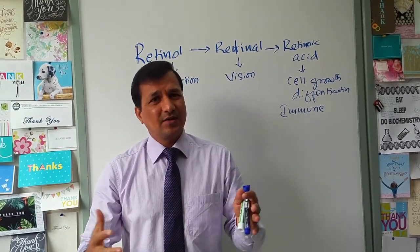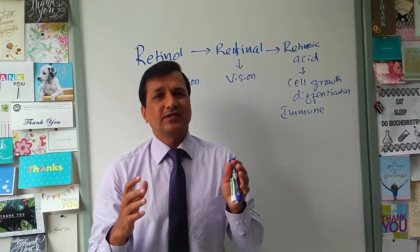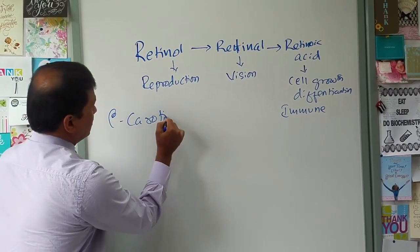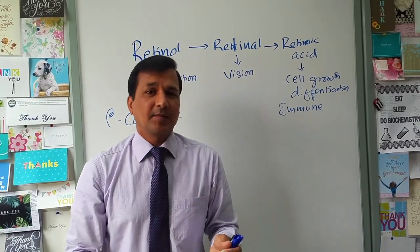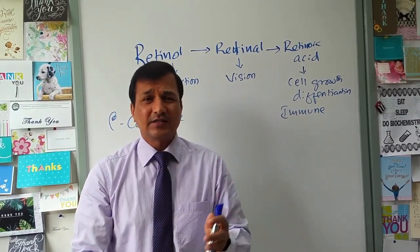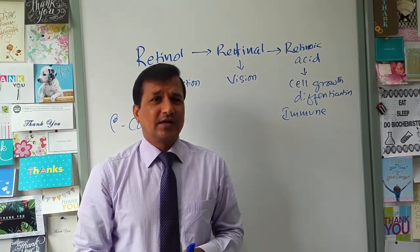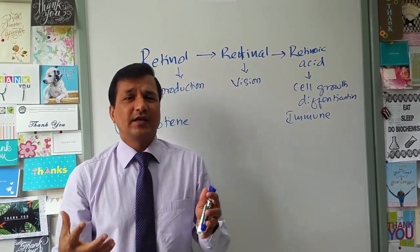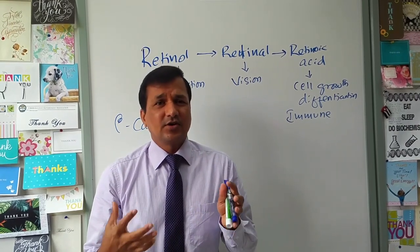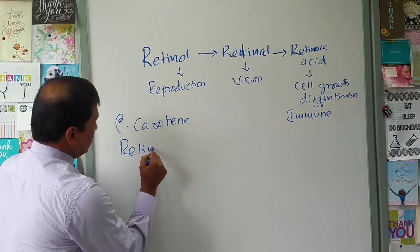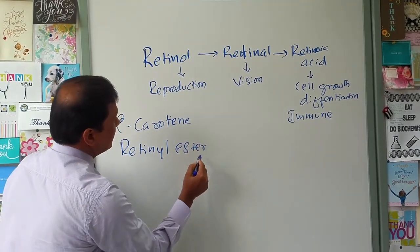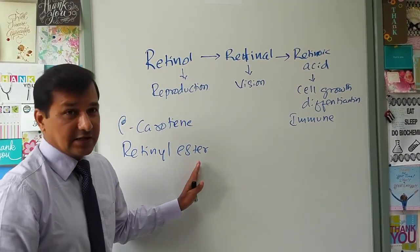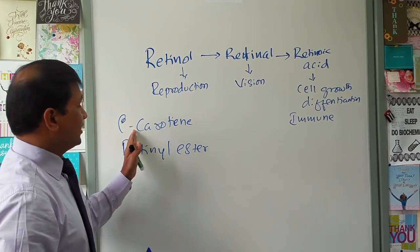Vitamin A comes from two food sources. From plant sources we get beta-carotene, found in colored foods like papaya, mangoes, and carrots. From animal sources we get retinol esters, which are retinol combined with a fatty acid.